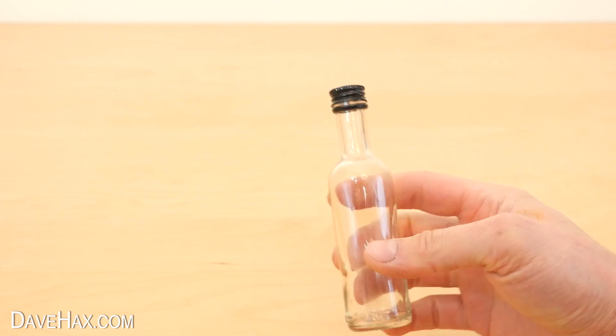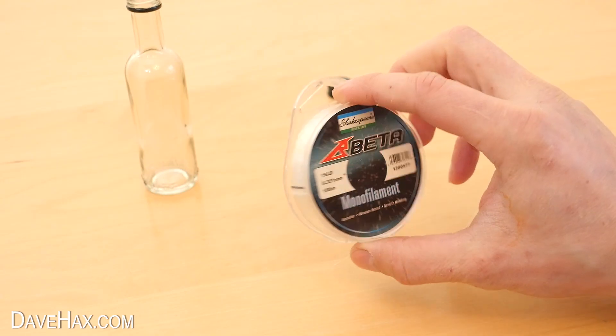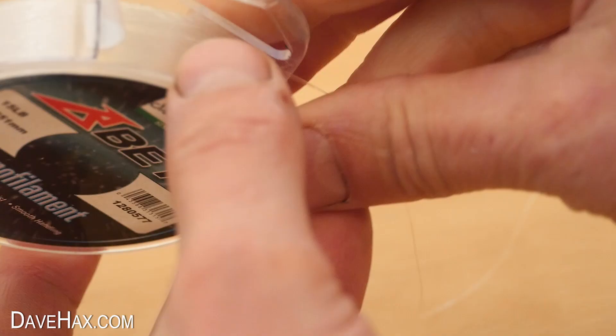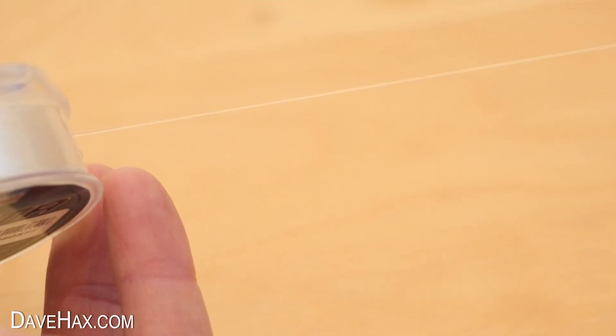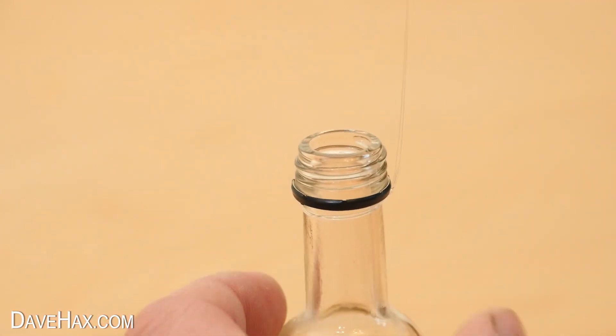Then take a small glass bottle and tie a string or thread to the top of it. I'm using this clear fishing wire, and we'll be using this to lower it into the vase later.